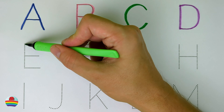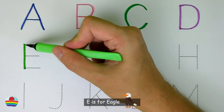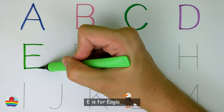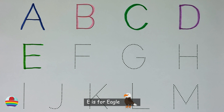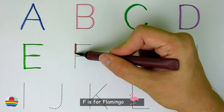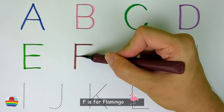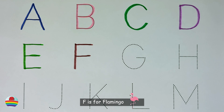E. E is for eagle. E. F. F is for flamingo. F.